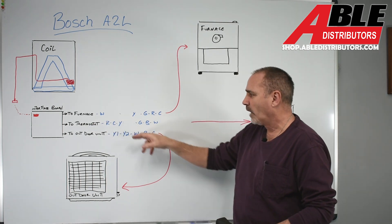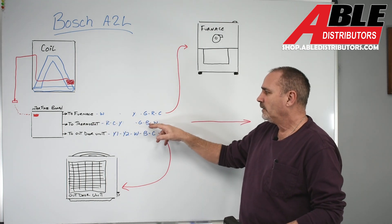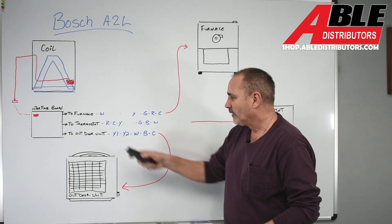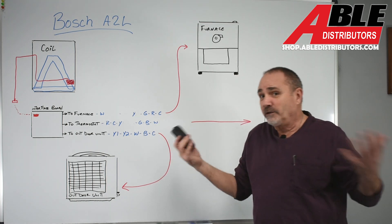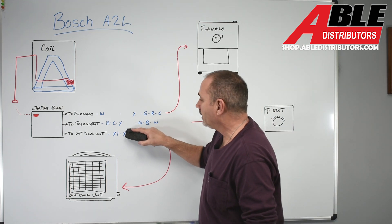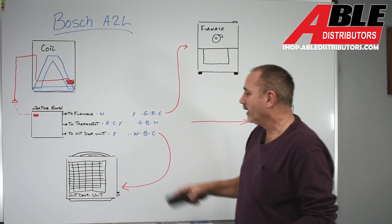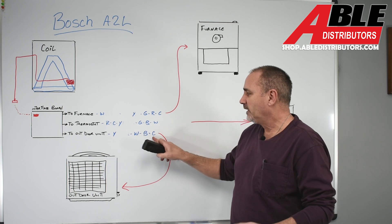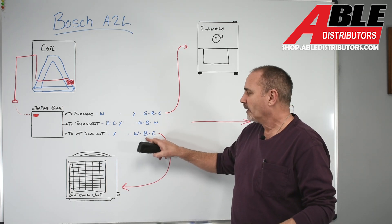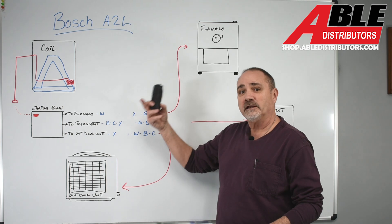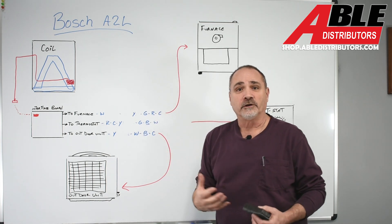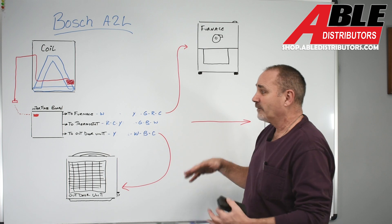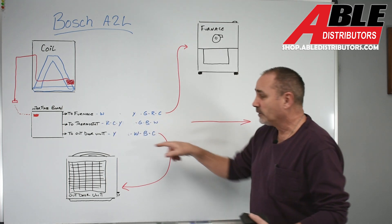To the thermostat, R, C, Y, G, your reversing valve, and your heat. And then to the outdoor unit, again, you're putting in a Bosch. You don't need, it's just going to be a Y. So you're going to want Y for your AC, C to power your AC, B for the reversing valve, and W to send the signal back to the furnace to turn on heat while you're in defrost. So if you're doing a standard basic install, that's all you need. Cap off all the other options.